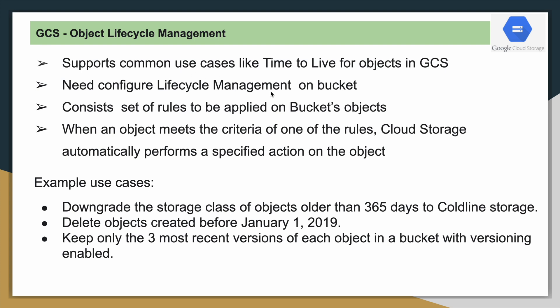In order to do that, you will have to configure lifecycle management on that particular bucket. The rules or conditions will be applicable to all the objects which are part of that bucket — it cannot be applied to a single object. Also remember, it is applicable to both existing objects and future objects coming into that bucket. This configuration consists of two things: rules and actions. When an object meets the criteria set as part of a rule, Google Cloud Storage will automatically perform that particular action.